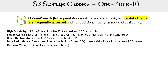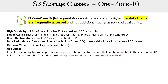Retrieval time is within milliseconds. Even though it says One Zone in the name, this is not Express, so it's not going to be single-digit milliseconds — it's just as fast as Standard and Standard-IA. The use cases here are ideal for secondary backup copies of on-premise data, for storing data that can be recreated in the event of an AZ failure, and also suitable for storing infrequently accessed data that is non-mission-critical.